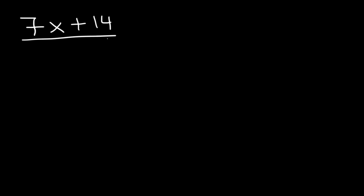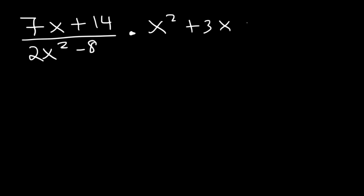In this video, we're going to focus on multiplying rational expressions and simplifying them as well. Here's the first example: 7x plus 14 divided by 2x squared minus 8, multiplied by x squared plus 3x minus 10. Feel free to try this example. The first thing I will do is put the second part into a fraction — write it over 1.